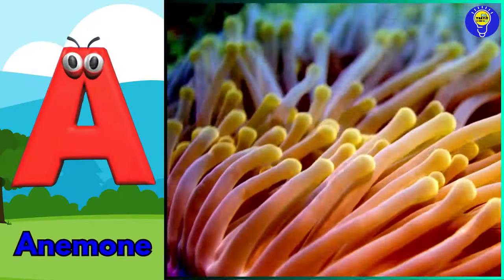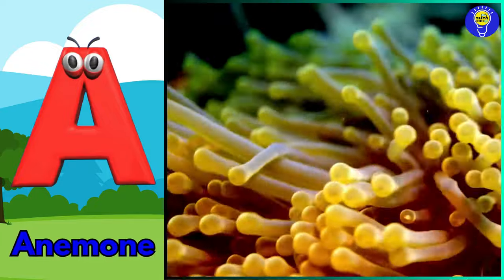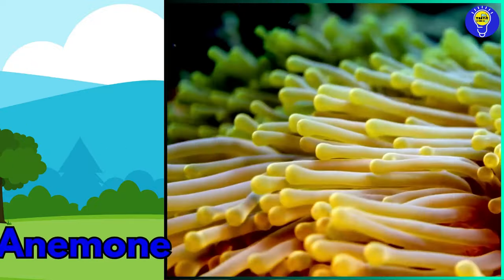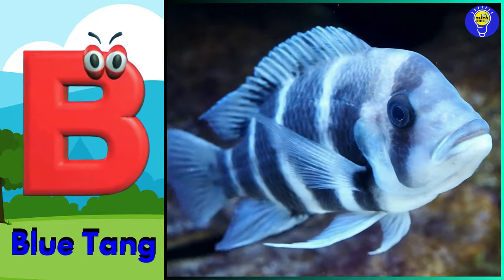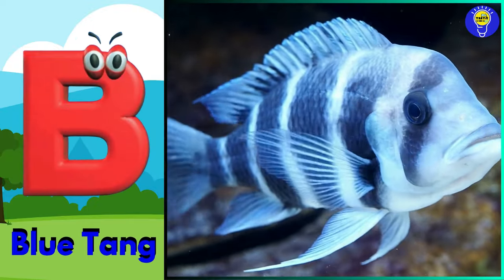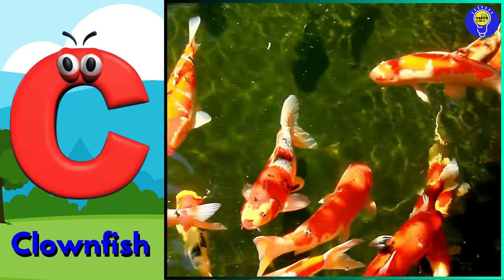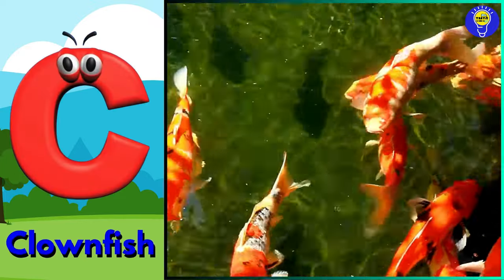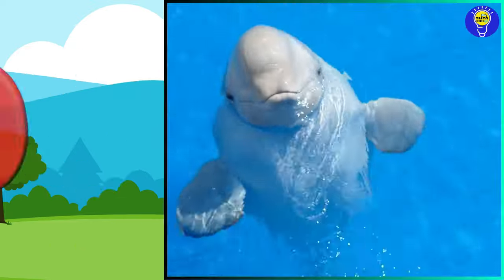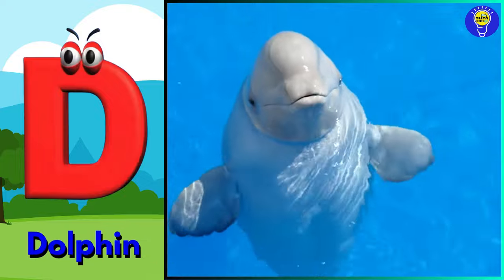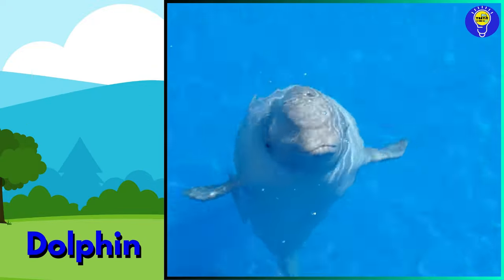A is for anemone. B is for blue tang. C is for blowfish. D is for dolphin.